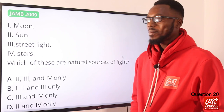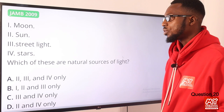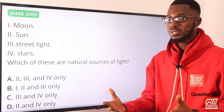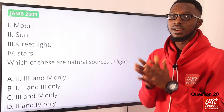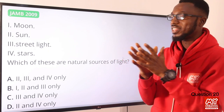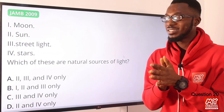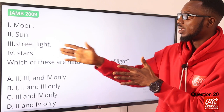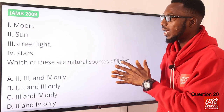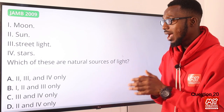Question 20: Moon, sun, street light, stars — which of these are natural sources of light? Natural sources are the sun and the stars. The moon and earth get their light from the sun. Street light is an artificial source. So the correct combination should include the sun and stars, which is presented in option D. Option D is the right combo.